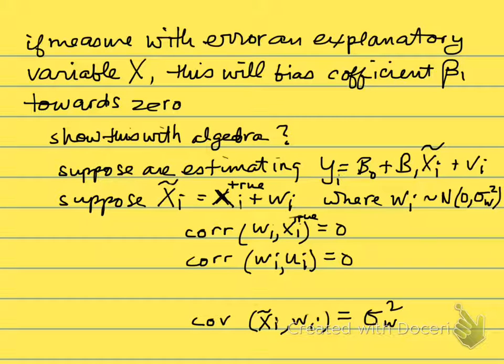Let's consider the effects of having measurement error in one of the explanatory variables and see how that will bias the coefficient on that explanatory variable towards zero. We'll start with thinking about the simplest case where we just have one explanatory variable because the math is a little bit easier there. The question is whether we can show this with algebra.